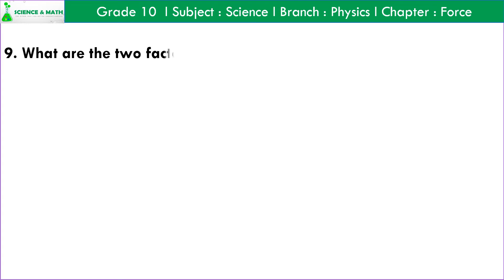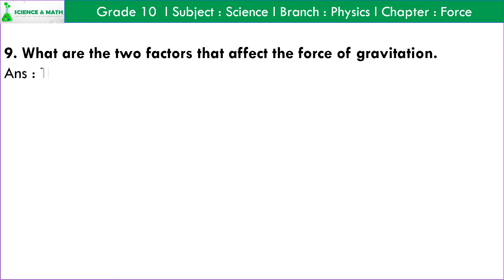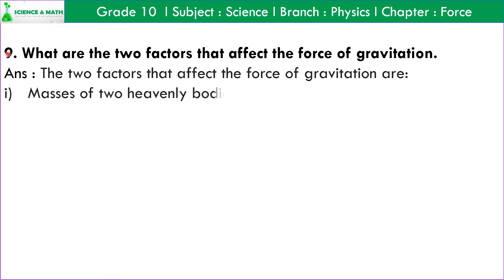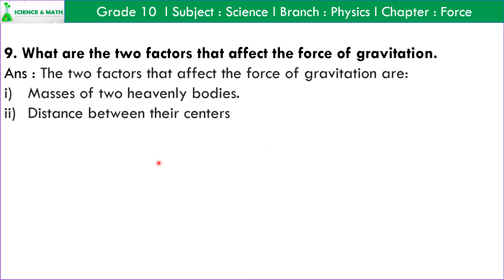Question number 9: What are the two factors that affect the force of gravitation? Answer: The two factors that affect the force of gravitation are: 1. Masses of two heavenly bodies. 2. Distance between their centers.